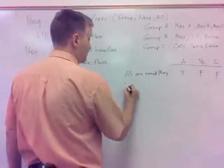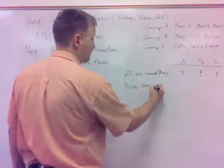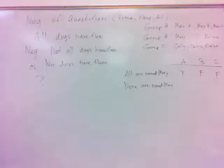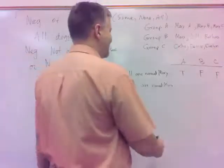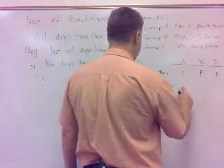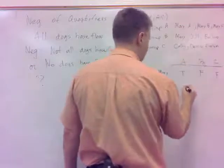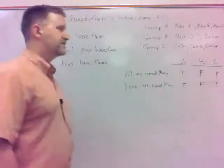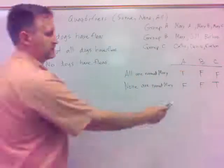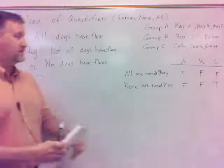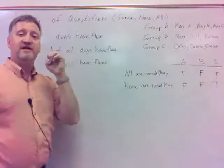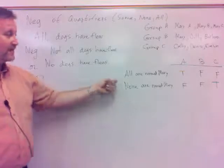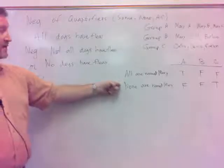Let's check if 'none are named Mary' is the negation. None of them named Mary in group A? Nope, that's false. None of them named Mary in group B? That's false. None of them named Mary in group C? Well, that's true. Is it a negation? Why not? It's not opposite in all cases. It's opposite here and here, but not here. A negation has to be opposite in every case. So 'none' or 'no' does not negate 'all' — you just can't change it over to none.